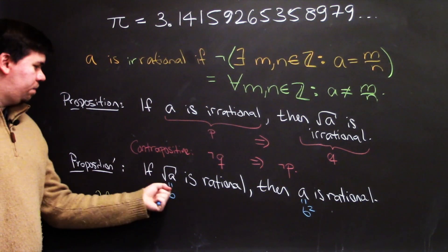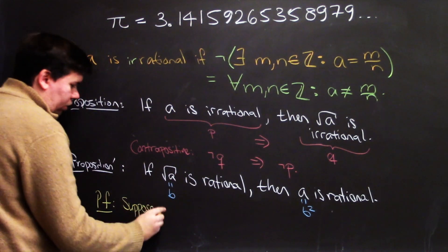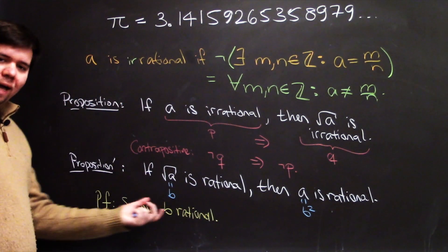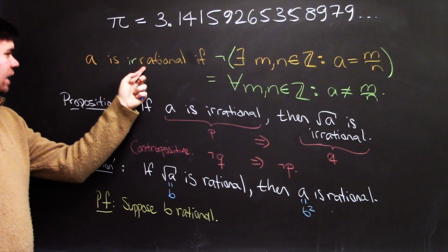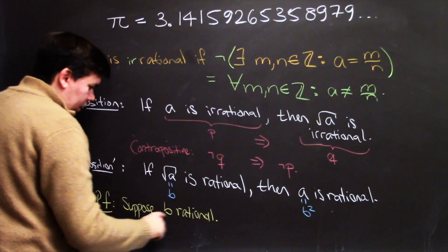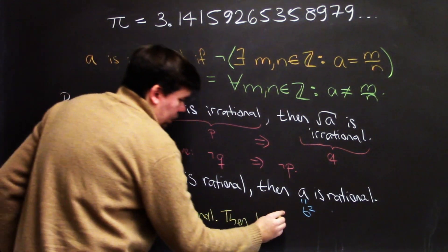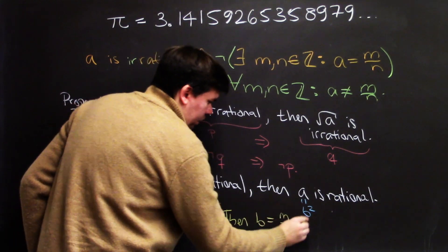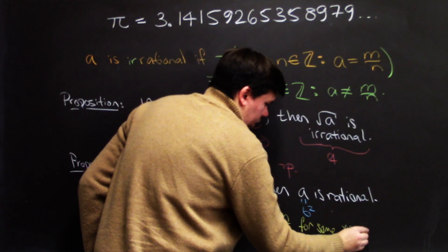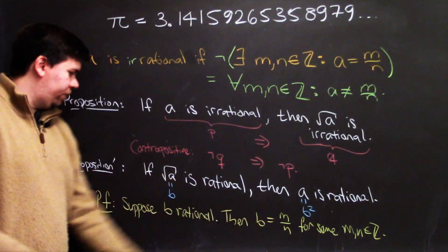What are we given? b is rational. So suppose you have some rational number b. Then by definition, we said you're rational if you can find some integers that you can express it as. So then, b can be expressed as the quotient of m and n for some integers m and n.